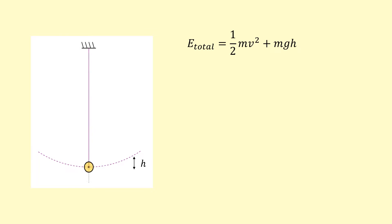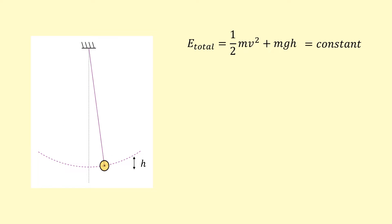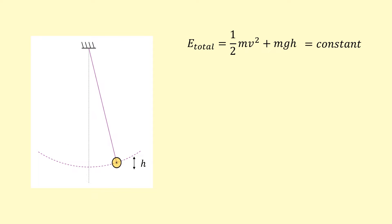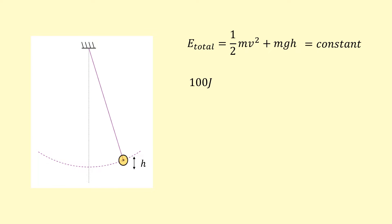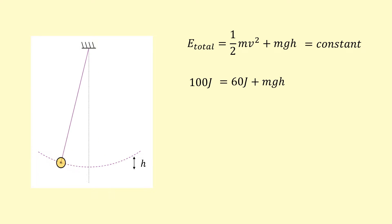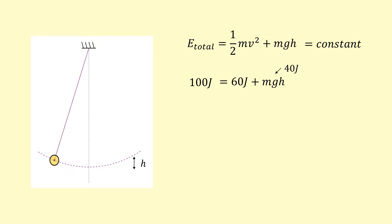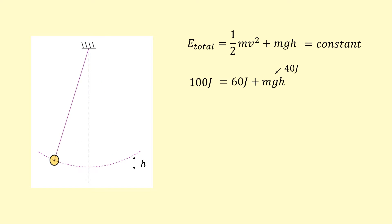The total energy is a constant — we're assuming there's no dissipation of energy to the surroundings and no resistive forces. For example, if the total energy is 100 joules and at some point the kinetic energy is 60 joules, then the gravitational potential energy must be 40 joules, because they add up to the total energy of 100 joules.